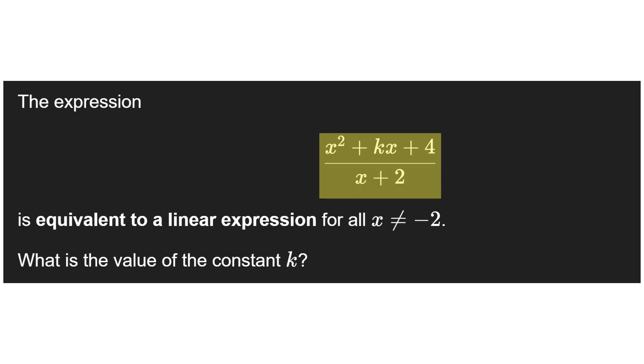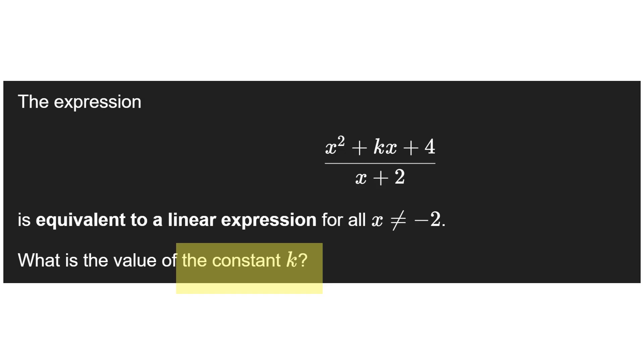The expression is equivalent to a linear expression for all x except x equals negative 2. What is the value of the constant k? When they say it's equivalent to a linear expression, that means once we simplify this fraction, there should be no remainder.